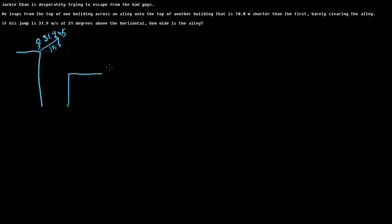And he barely clears the alley, so we'll assume that the width of the alley is just delta x. We know that this building is 10 meters shorter than the first, so that means delta y is negative 10. And what else do we know? That's it. So we're looking for delta x.